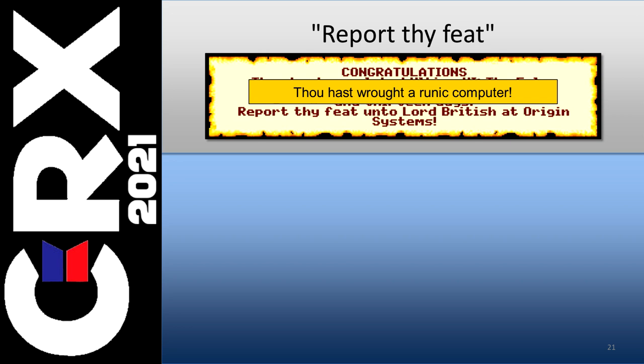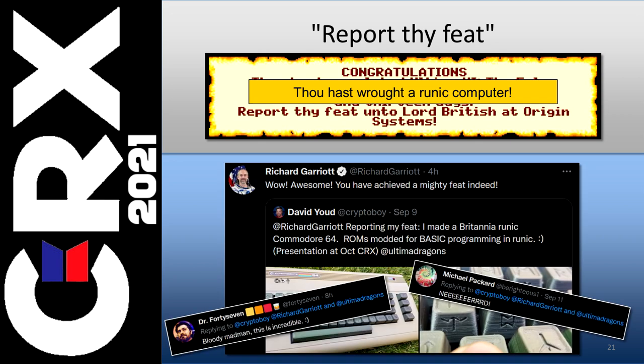Like any Ultima game, this project took way longer to complete than expected. For those who don't know, when you complete an Ultima game — which is of course way harder in the pre-Google days — the game told you to 'report thy feat unto Lord British,' and it would give you contact information for doing exactly that. Garriott and team would then send you a certificate in the mail recognizing your achievement. What's cool is that Garriott still responds to people who report their game completions on Twitter, so naturally I had to report my feat there as well — and he responded, which is awesome. He says, 'You've achieved a mighty feat indeed.' That was cool. I got a lot of other responses on Twitter and Facebook, and surprisingly, no one left me a detailed message about how I was having fun the wrong way, which is normally what happens when I post my useless projects. So maybe people are relaxing these days.